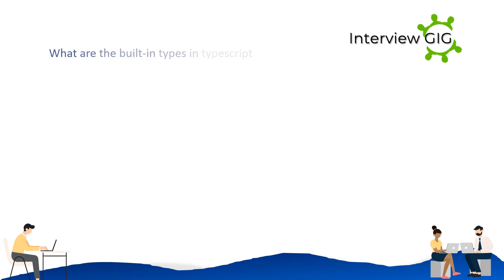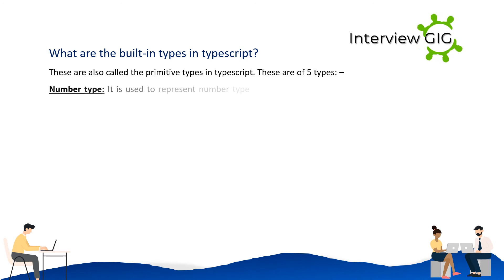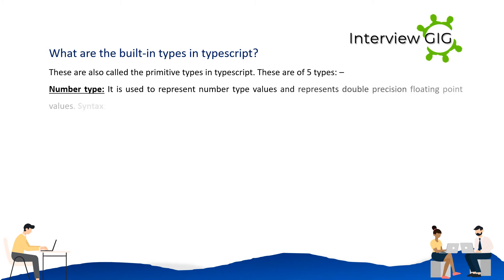What are the built-in types in TypeScript? These are also called primitive types. There are five types. Number type: used to represent number type values and represents double precision floating point values. Syntax: var variable_name: number.